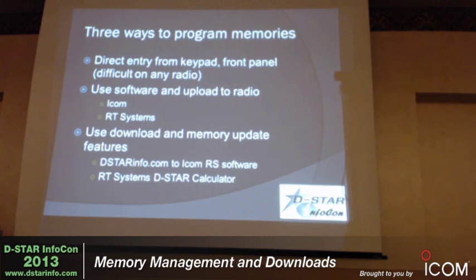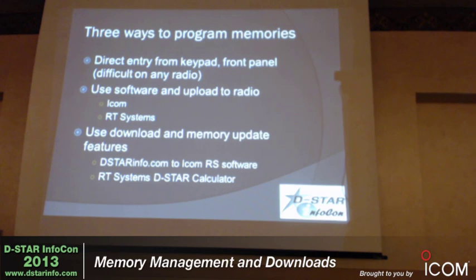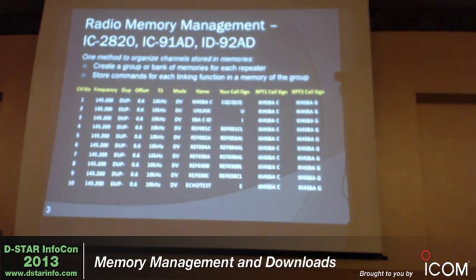The database is also the most up-to-date because there are several methods used to keep that information updated, mainly from the users of those repeaters. If the El Paso repeater changed frequencies and isn't updated, you need to tell us. You can update it yourself, or we'll use other methods to pull in that data. Now, if you're using a 2820, 91, 92, or similar radio, you might want to set up your radio with a block of memories organized by repeater.